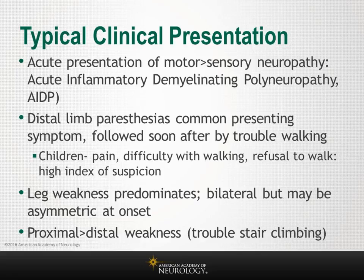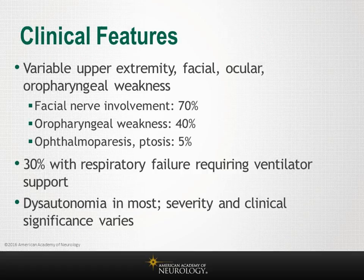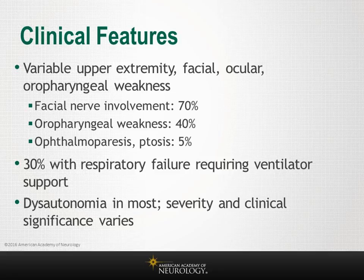Within a few days, weakness ensues, commonly in a symmetric ascending pattern, though it can be somewhat asymmetric especially at onset. Most patients present initially with proximal and distal weakness in the lower extremities spreading to the arms — approximately half the patients. A third present with both leg and arm weakness, and about 10 to 12 percent have onset of weakness in the arms.